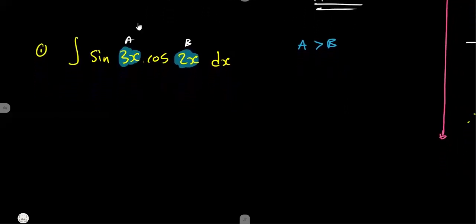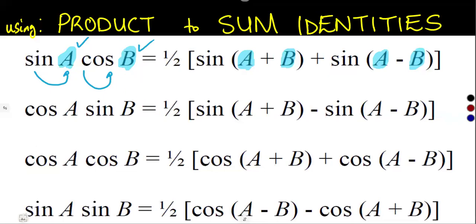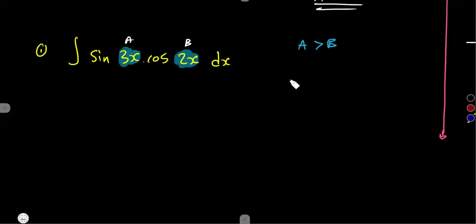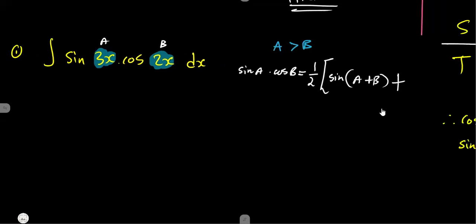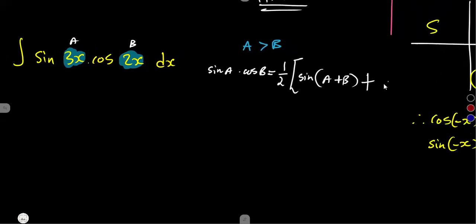So what is the corresponding identity where there is a sine and a cosine? We are going to use: sine A times cosine B equals one-half of sine(A plus B) plus sine(A minus B). This is the trigonometric identity we will apply.